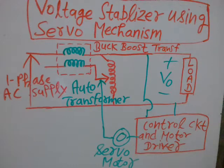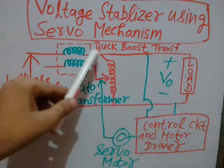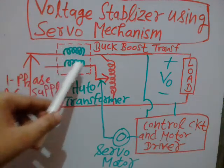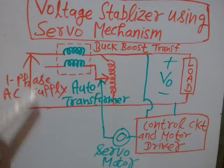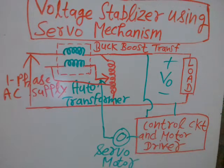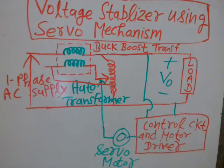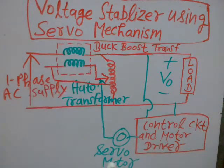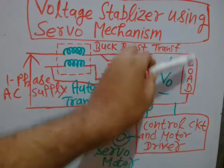This is the auto transformer connected here — this is a buck-boost transformer — and this is the single-phase AC supply coming in. In an ordinary stabilizer, a relay is connected, but here no relay is used at all. This circuit is free from any relay and instead uses a servo motor and auto transformer combination with a buck-boost transformer to fix the voltage across the load.